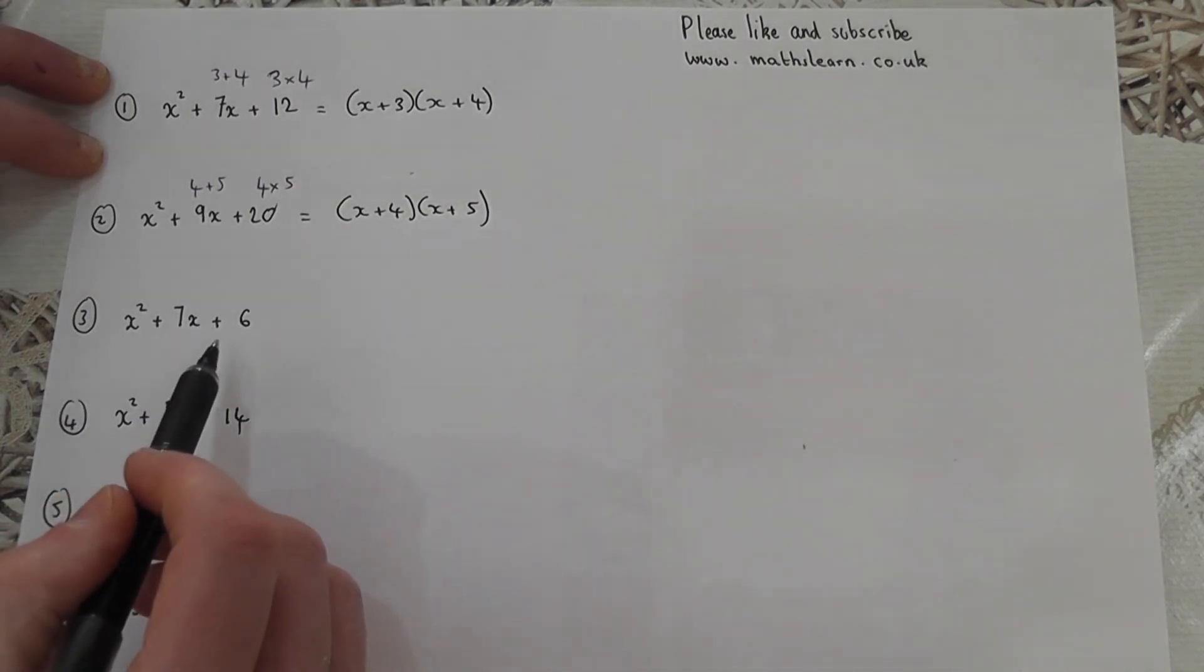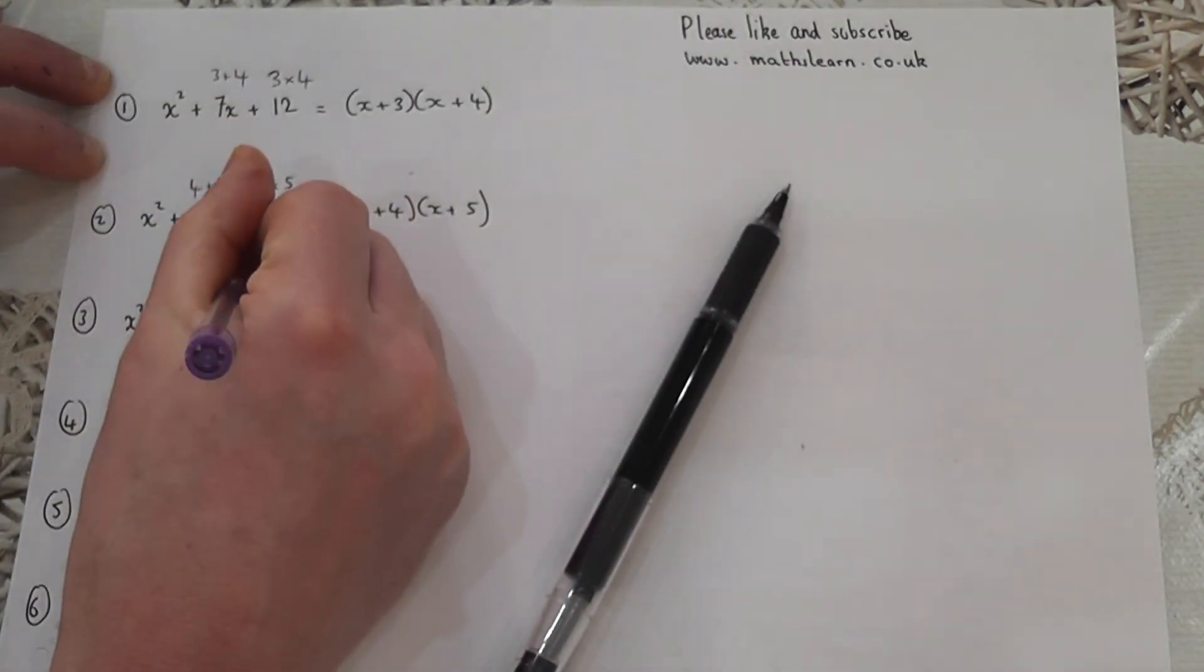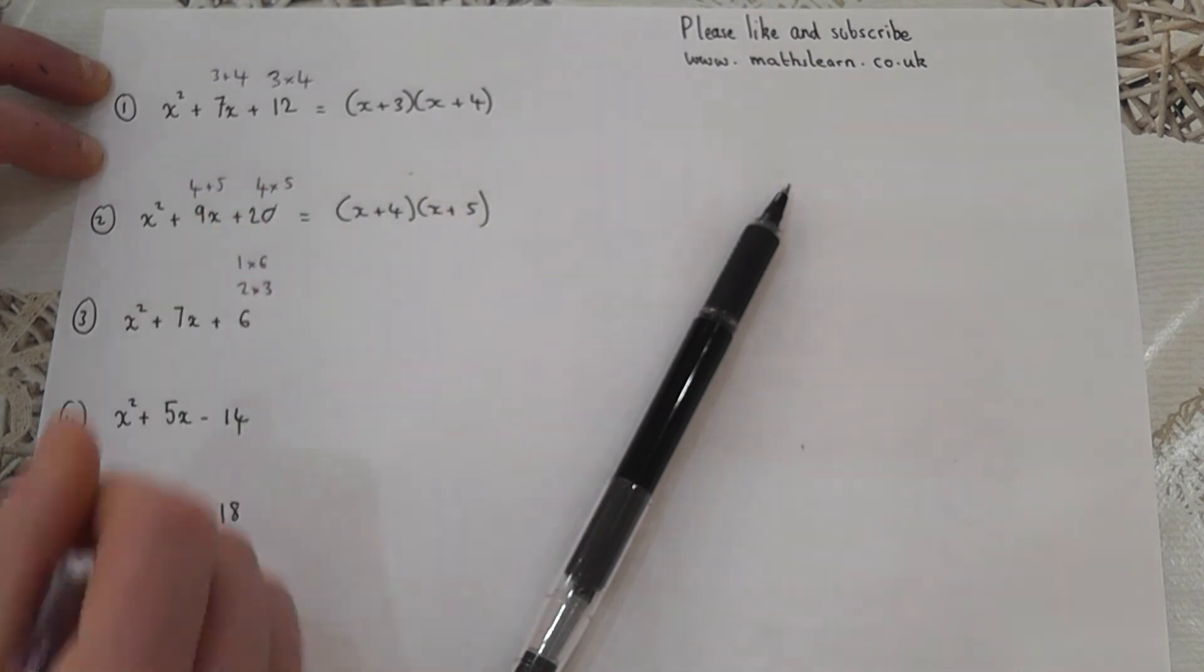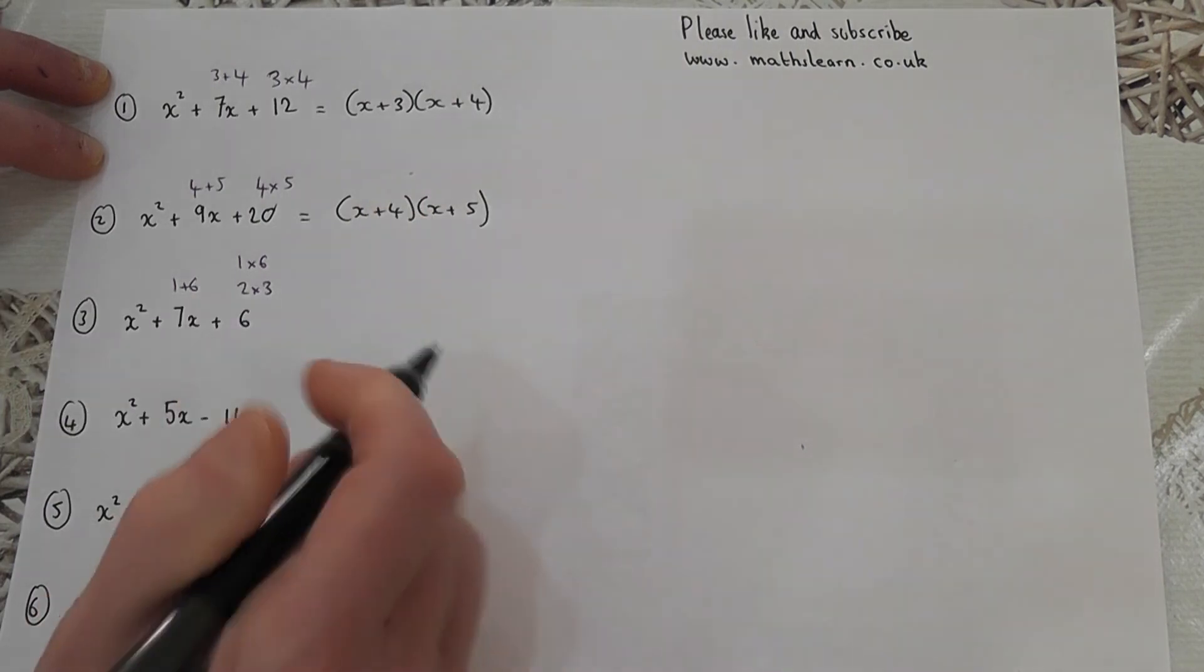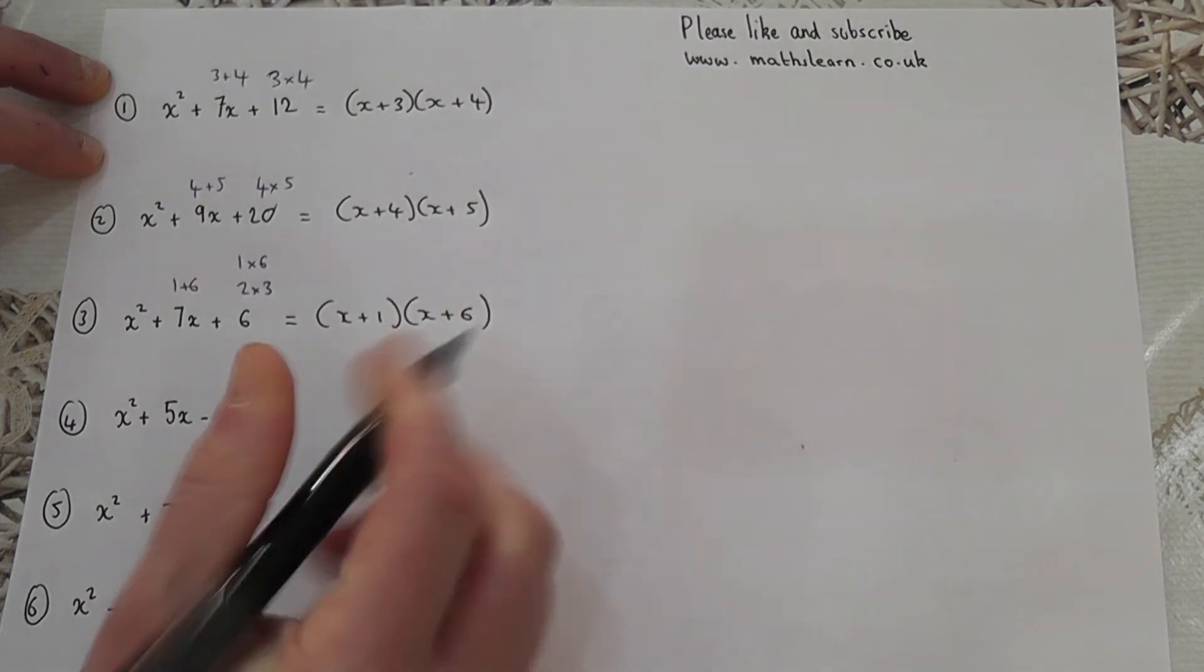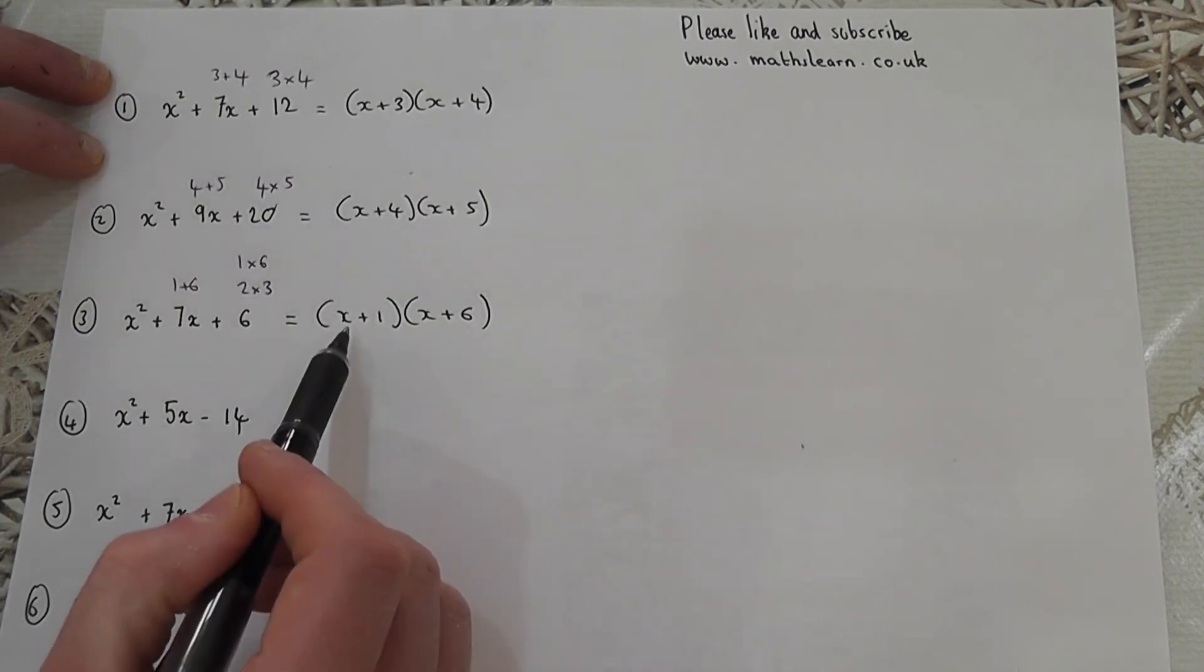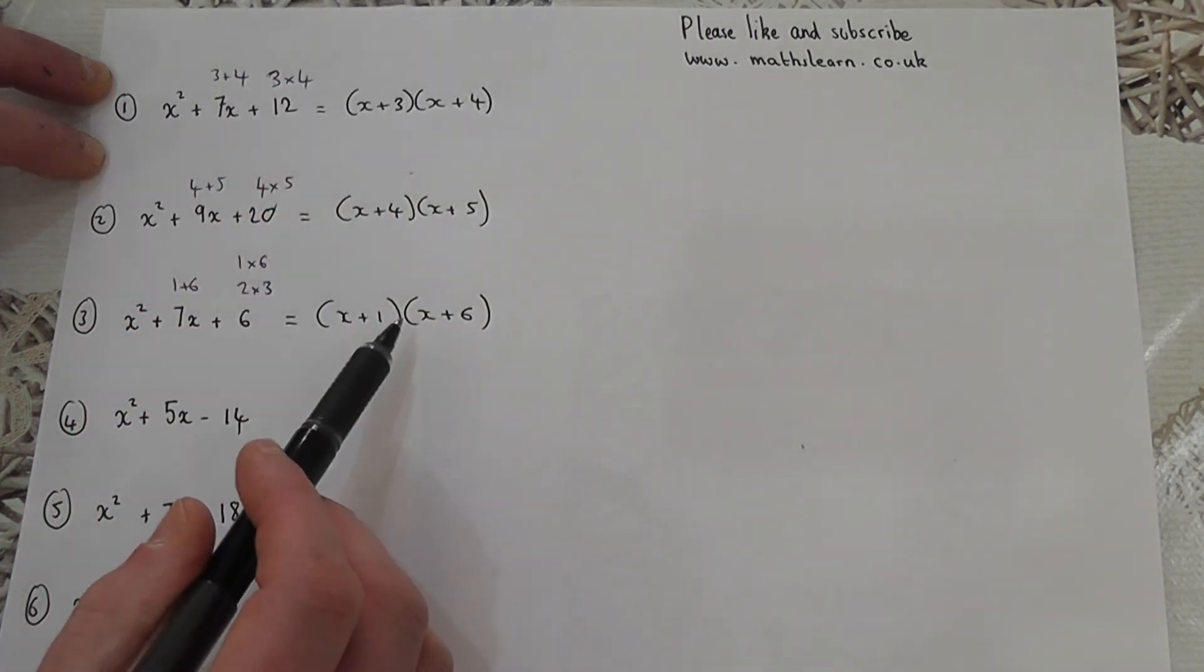The third one sometimes can cause a bit of confusion. The factor pair of 6, the obvious one, is 2 times 3, but that doesn't add to make 7. Don't forget that 1 times 6 also works, and 1 plus 6 is 7. So the answer is x plus 1 and x plus 6. A quick point of order: you can have the brackets either way around, so for all the answers here, you can swap the order of the brackets.